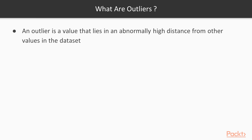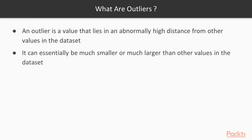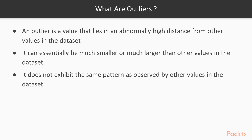So what exactly are outliers? An outlier is a value that lies at an abnormally high distance from other values in a data set. Another way of looking at an outlier is that it will have a very high or very low value as compared to other values in the data set. It can essentially be much smaller or much larger, and in some cases it might not exhibit the same data pattern as shown by other values in the data set.